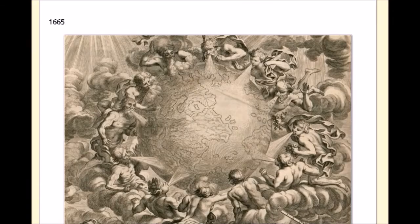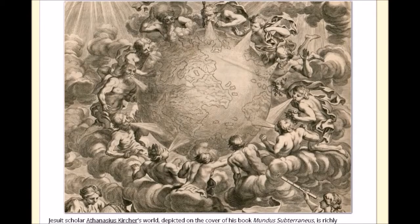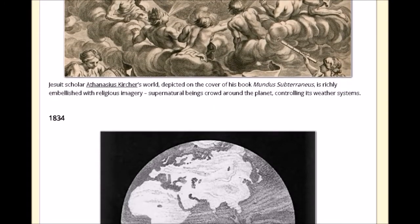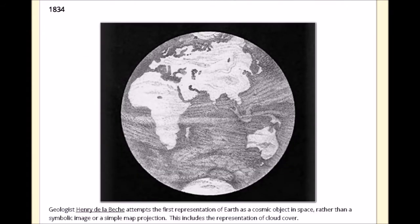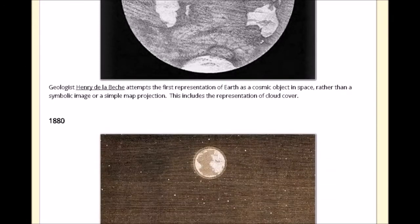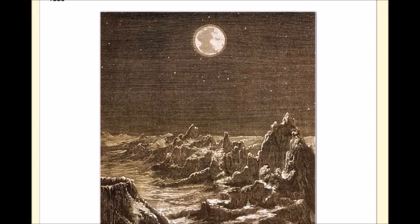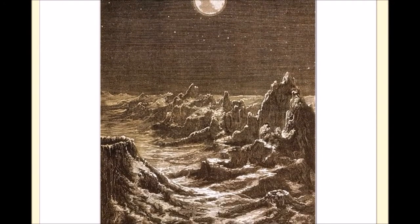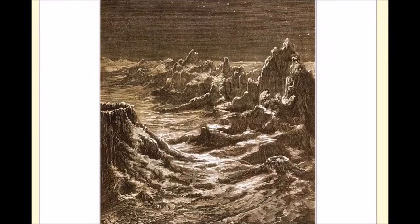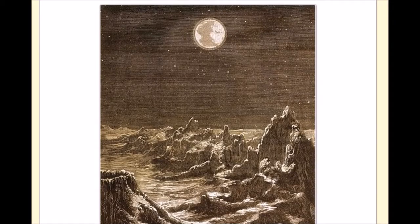And then 1665, you have the Jesuit creation there, and the Jesuits get busy, I suppose. And then 1834 — this one's also interesting — a geologist attempts the first representation of earth as a cosmic object in space. That looks pretty good; it looks like the stuff that NASA uses, so they probably just took his 1834 image and turned that into the blue marble. And then in 1880, we have this image of the earth — this is actually the earthrise from the moon — and it's so interesting how they program this stuff in the 1880s, and then what do we get from NASA but the earthrise from the moon when they act like they're actually doing it.